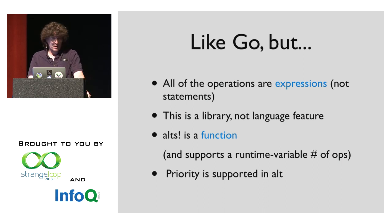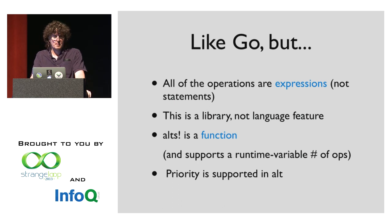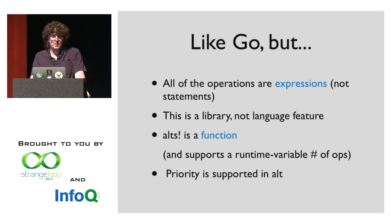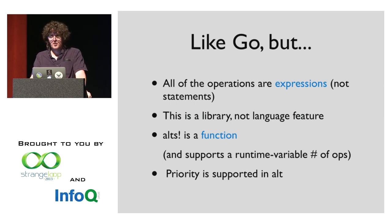If you know Go, this is very similar. But the things that are different: all the operations and everything shown are expressions — it's for a functional programming language, there are no statements. You don't need to have state to start interoperating with channels, because channels are a state mechanism already. It's a library, not a language feature — it uses macros to do what it does. The Go macro is the thing that inverts control and sets up the state machines for you. And `alts!` is a function — you can map it, it's variadic, it supports a runtime variable number of operations. You can't do that with any construct in Go because they're all statements.